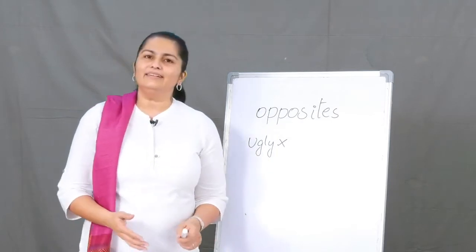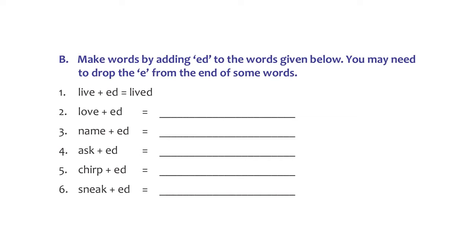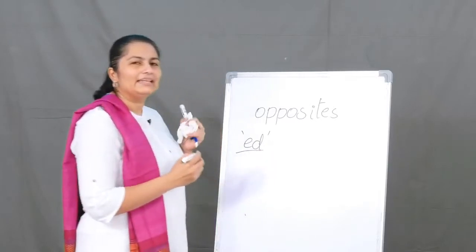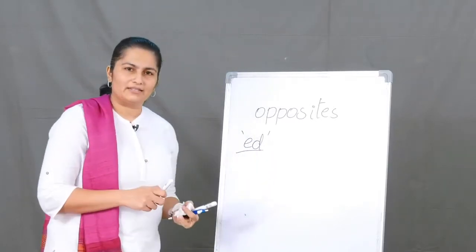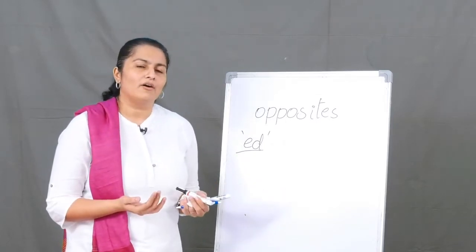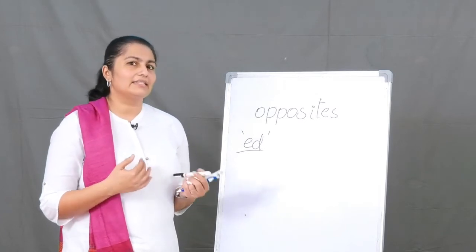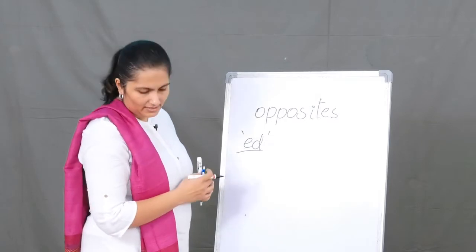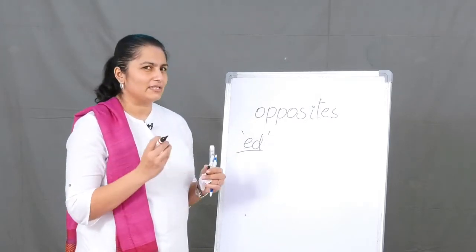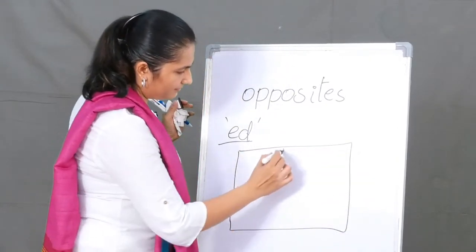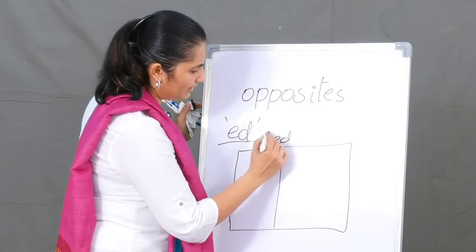The next one is to add '-ed' to a word. When you add '-ed' it becomes a word of the past — like 'I did it', 'I cooked', 'I listened', 'I danced'. So when you add '-ed' to the word it becomes a word of the past. It's a little tricky, so let's take a look at some examples.